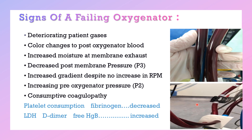Signs of oxygenator failure include: decreased saturation on blood gas, color change of post-oxygenator blood — normally venous blood is dark red and arterial blood is bright red, but in failure both are the same color. Other signs include increased moisture at the membrane, decreased post-membrane pressure P3, increased gradient despite no increase in RPM, increased pre-oxygenator pressure P2, consumptive coagulopathy shown as decreased platelet count and fibrinogen, increased free hemoglobin, and increased D-dimer and LDH.